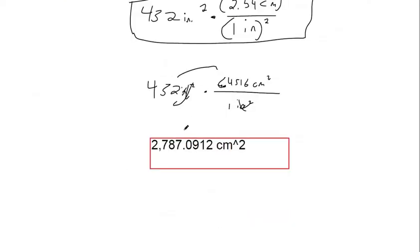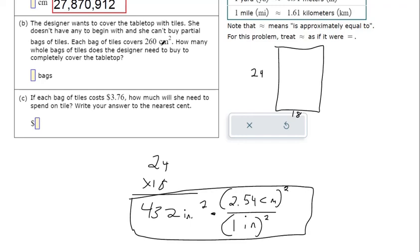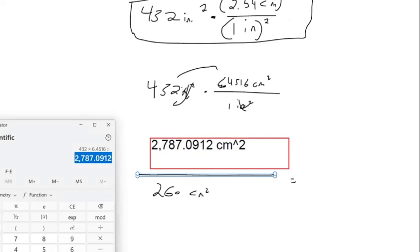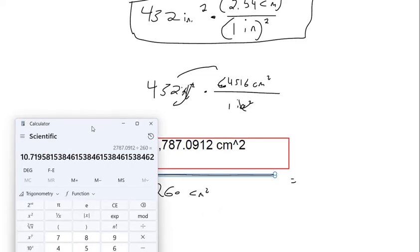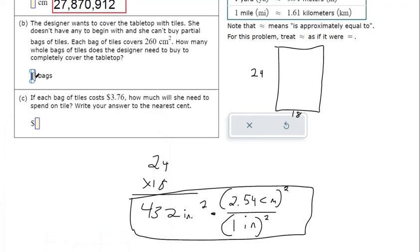You've got this many square centimeters available. It's going to cost us 260 square centimeters for each tile. So you divide those two. If you divide that, it's 10.719. But they said they can't buy partial, so we're going to have 11.